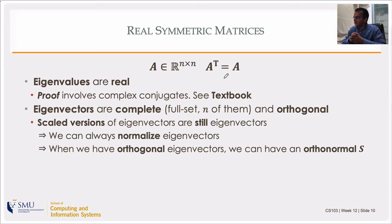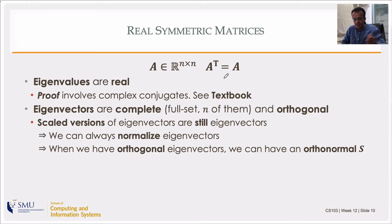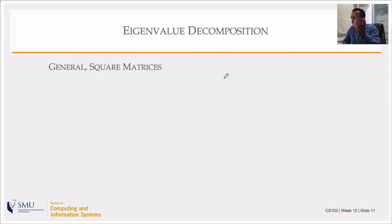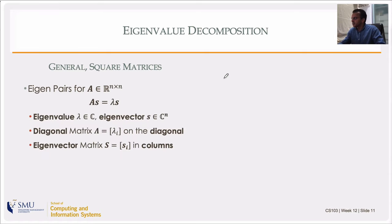When I say orthogonal eigenvectors, if you have an eigenspace you have the freedom to choose an orthonormal basis in that eigenspace. Since eigenvectors only specify directions, we are free to normalize them — so orthogonal eigenvectors can always be made orthonormal. The eigenvector matrix S then becomes an orthonormal matrix. The signs of pivots and eigenvalues are connected: the number of positive pivots equals the number of positive eigenvalues — this is Sylvester's law of inertia.